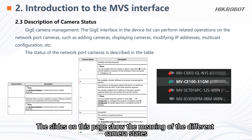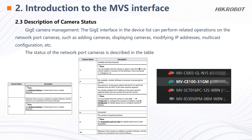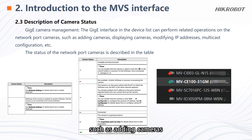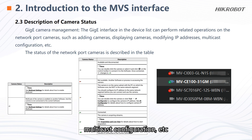The slides on this page show the meaning of the different camera states. The GigE interface in the device list can perform related operations on network port cameras, such as adding cameras, displaying cameras, modifying IP addresses, and multicast configuration.